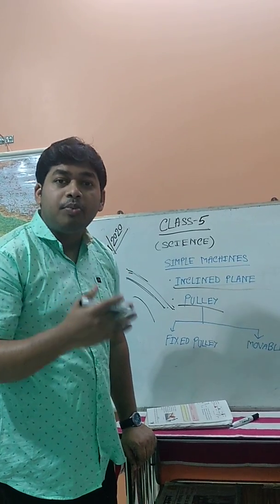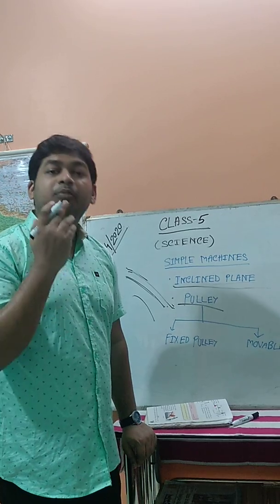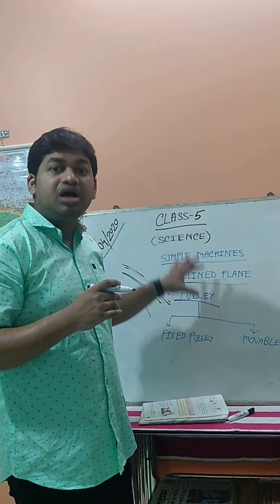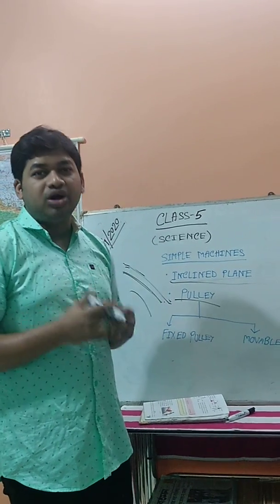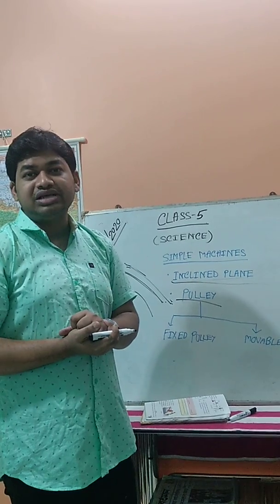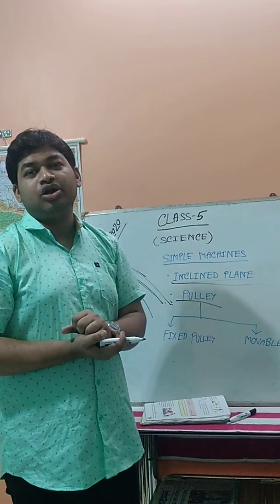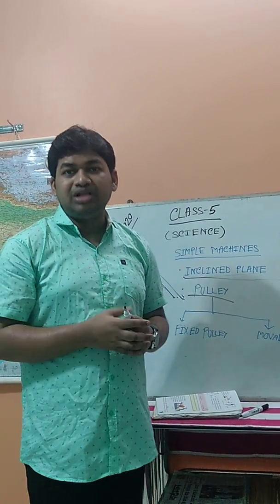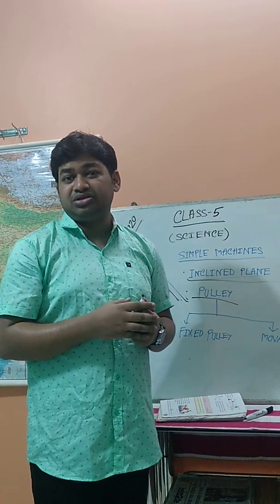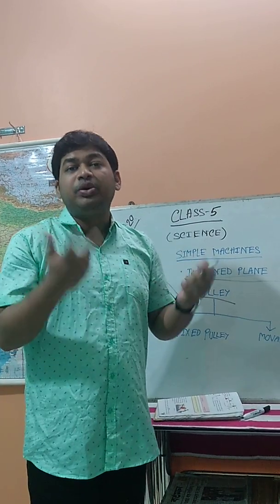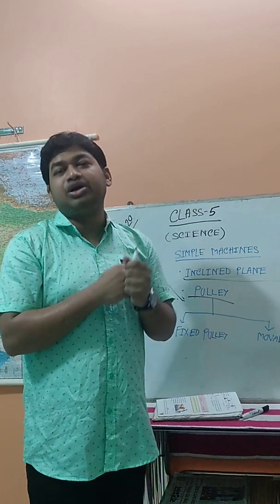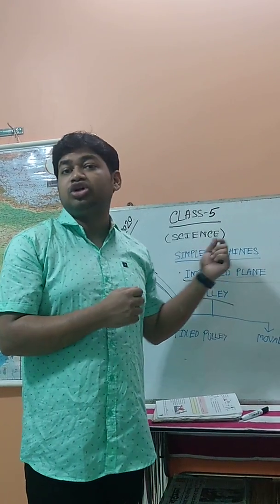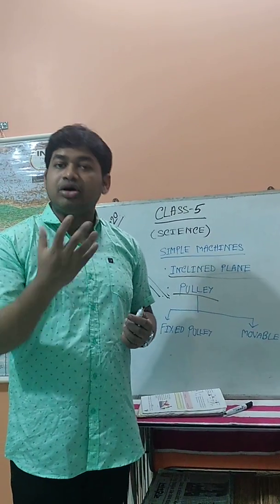The next topic is the pulley. A pulley is a simple machine with a rope or chain that goes around a wheel. The pulley is used because it changes the direction of the applied force and helps to lift heavier objects from downward to upward. For example, in a well, a wheel is kept and a chain or rope is walked around it. When we pull the rope, it helps us take water from inside the well to the outside.